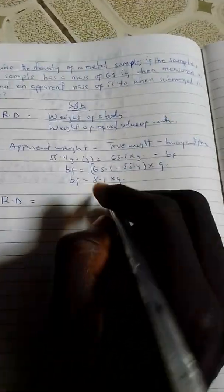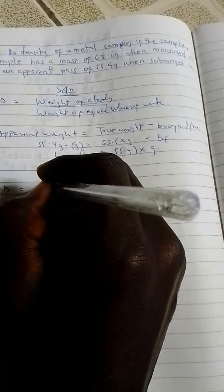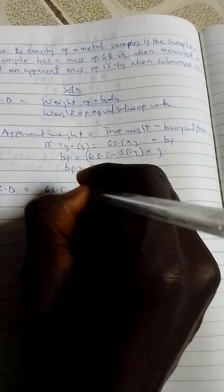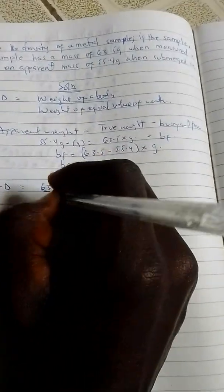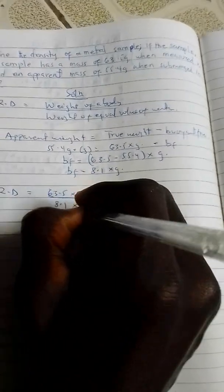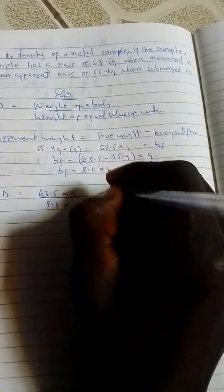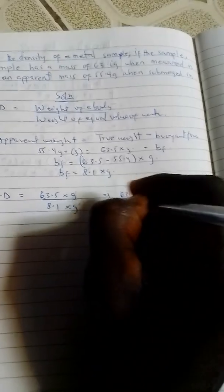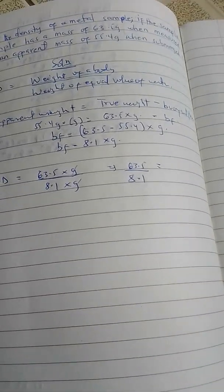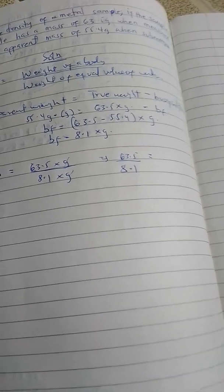Now let's come back to our relative density. Our relative density becomes the weight of the body, which is 63.5 times gravity, over the buoyant force, which is 8.1 times gravity. Gravity cancels and we have 63.5 over 8.1, giving us 7.8395.